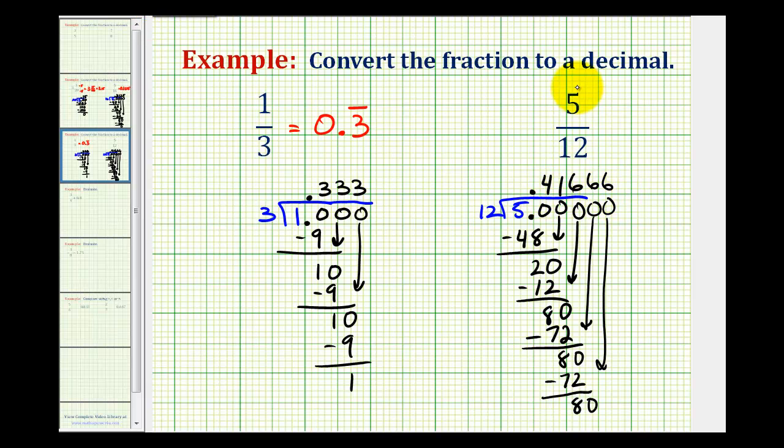So five-twelfths as a decimal is equal to zero point four one six repeating. And because only the six is repeating, we put the bar only over the six. If we put it over the one or the four, that would mean that those digits are also repeating, and they're not. It's only the six.